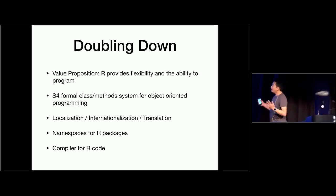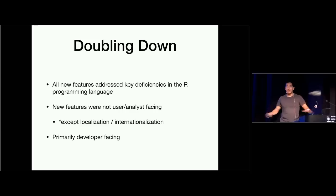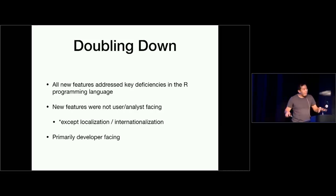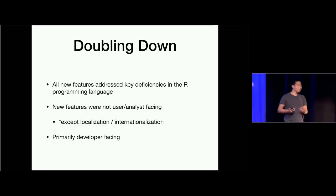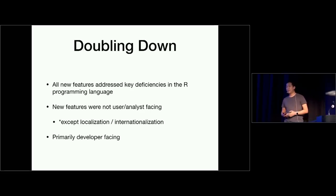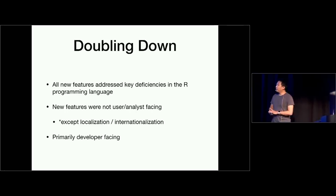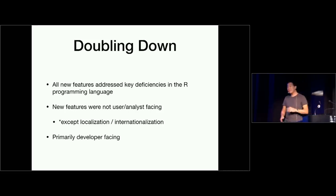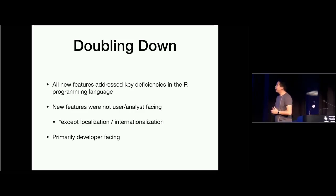All these things addressed key deficiencies in R relative to other programming languages. People were coming in from Perl, C, Fortran — all those other languages had many of these features. But at the end of the day, the new features were not really analyst-facing or user-facing. These were developer-facing features that allowed you to build better R packages, better and more efficient R code for other people. One exception was the localization and internationalization effort, which really made R a global package — at the time and maybe even now, a major differentiator for the R system.